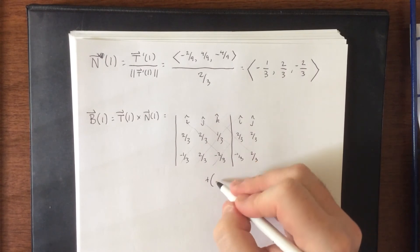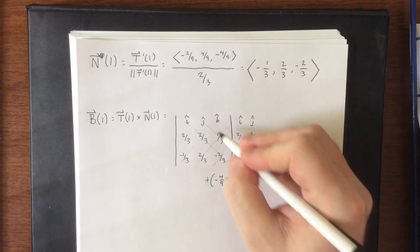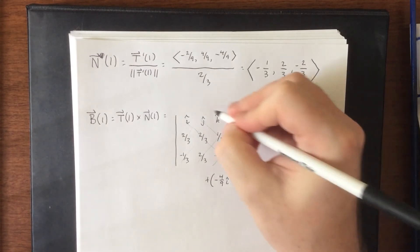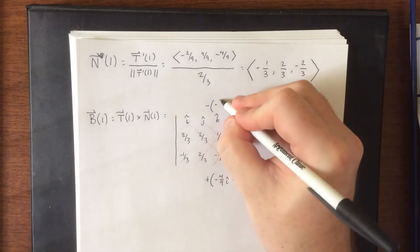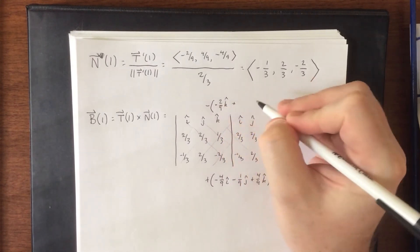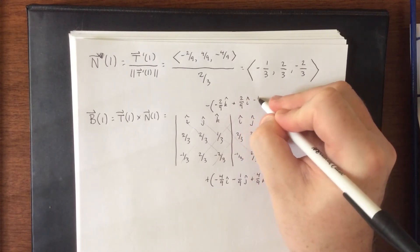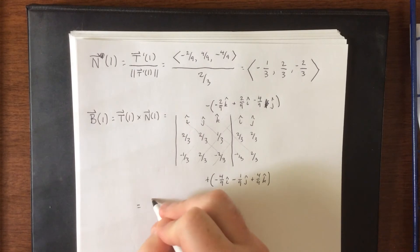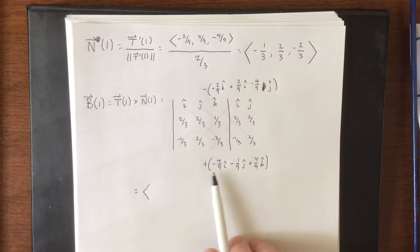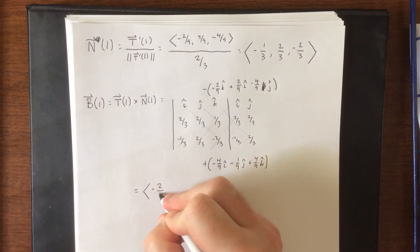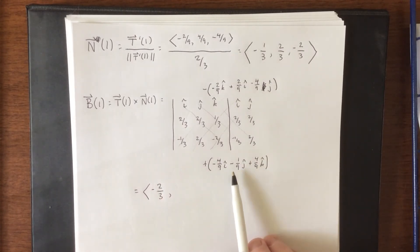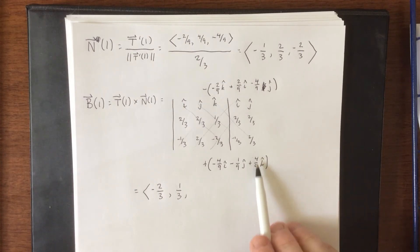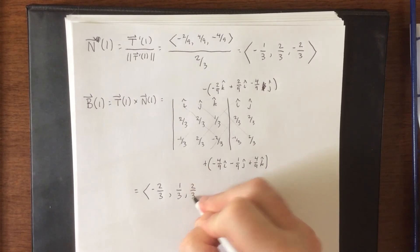We will get negative 2 thirds times 2 thirds times i, that is negative 4 ninths i, negative 1 third times 1 third times j, that'll be minus 1 ninths j, and then we'll get a positive four-ninths k. We are going to subtract, that'll be negative two-ninths k plus two-ninths i minus four-ninths j, no k, jk lol. Now we get to actually combine all of these together. For our i component, I see negative four-ninths minus two-ninths, that's negative six-ninths, which reduces to negative two-thirds. For j, we have negative one-ninth minus negative four-ninths, that'll be positive three-ninths, which reduces to one-third. And finally for the k component, we have four-ninths and we are subtracting negative two-ninths, that is positive six-ninths, which reduces to positive two-thirds.